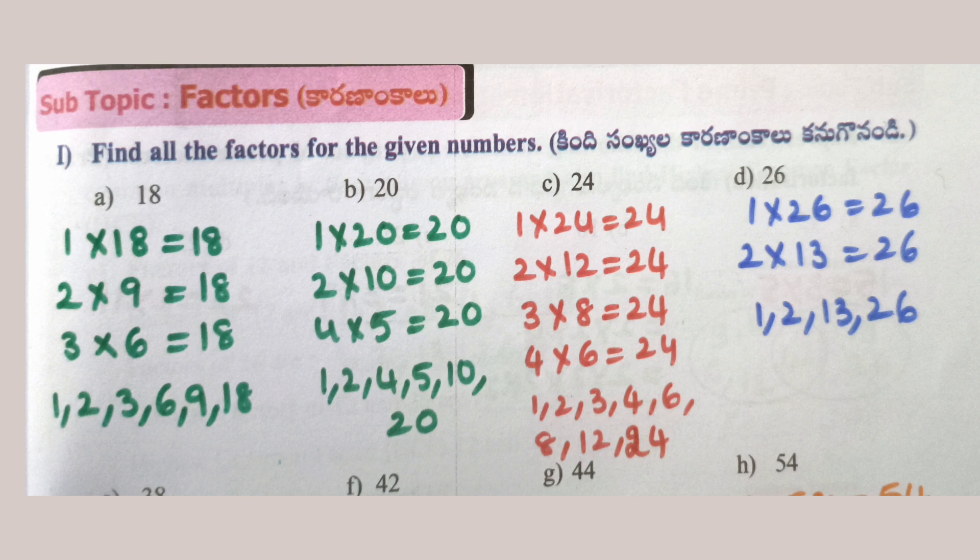20: 1×20=20, 2×10=20, 4×5=20. So factors of 20 are 1, 2, 4, 5, 10, 20.